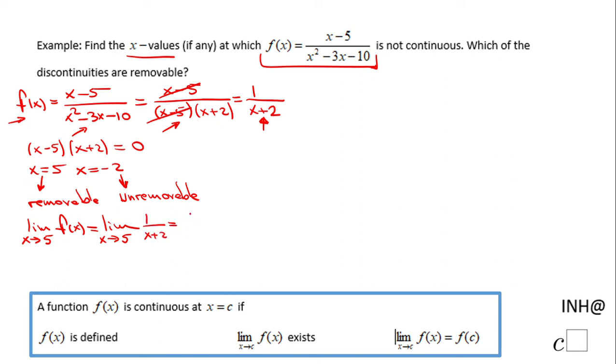And that will be 1 over 7 if you replace x with 5. In this moment, that's the way you can see the limit exists—it's 1/7. The value of the function at 5 does not exist. The function is not continuous there.